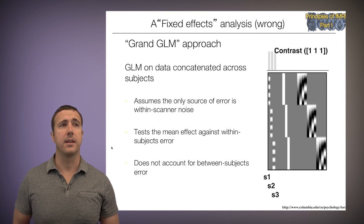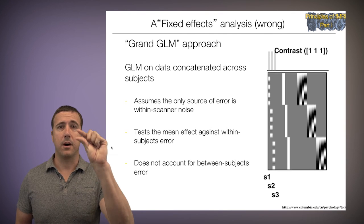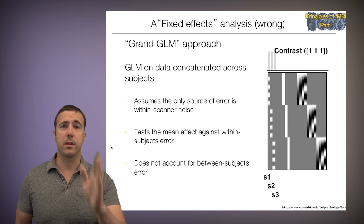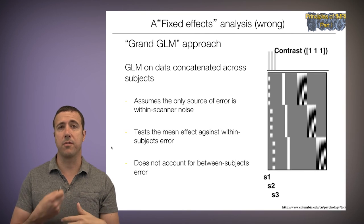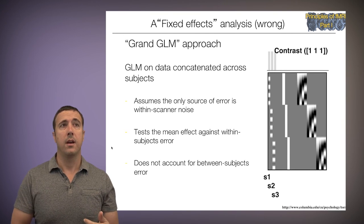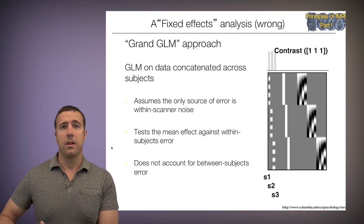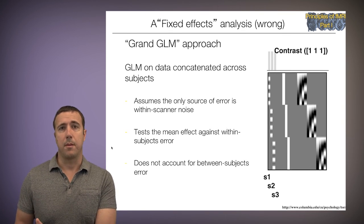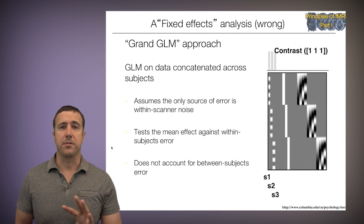And this is a GLM on data that's concatenated across subjects. So what you see here is an image of the design matrix where I've got this blocked on-off design modeled separately for each subject. So every subject gets one estimate for their individual slope. I've got the intercepts for each subject. And I've got some nuisance covariates, some filtering covariates, high-pass filtering covariates for each subject. And there are three example subjects here. So I've concatenated all of them.